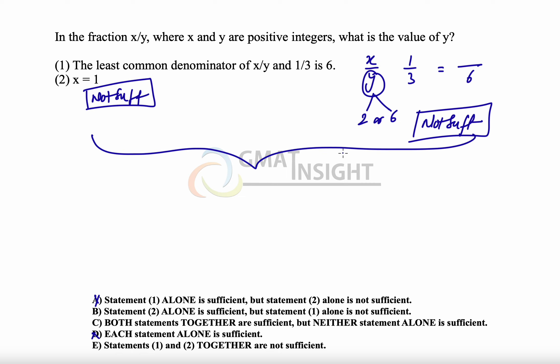And even after we combine the two statements, we understand that y could still be either 2 or 6. And the answer to the question becomes option E. Even after combining the two statements, the information is not sufficient.